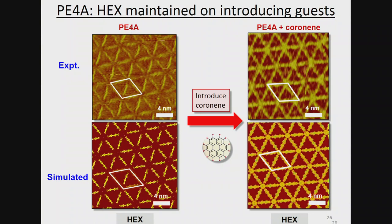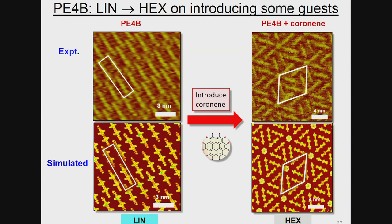When I introduce the guest molecules — for example coronene — in some cases the pattern remains basically unaltered: you can see coronene just goes and sits in these cavities, appearing as blobs. In other cases the pattern changes drastically on introducing the guest. For PE4B it forms the linear pattern in the absence of the guest, and then when the guest is introduced you can see the symmetries change drastically and it goes from a linear pattern to a hexagonal pattern.